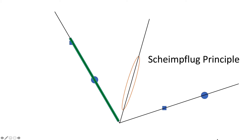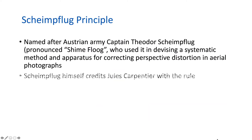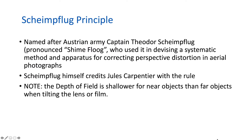This is known as the Scheimpflug Principle. It is named after Captain Theodor Scheimpflug, who used it to develop a method of correcting perspective distortions in aerial photographs. Although he's probably not the person who originally invented this method, as Scheimpflug himself credits a French engineer, Jules Carpentier, with the rule.